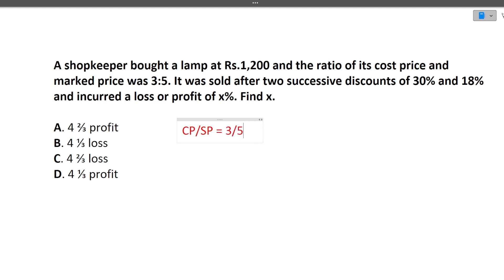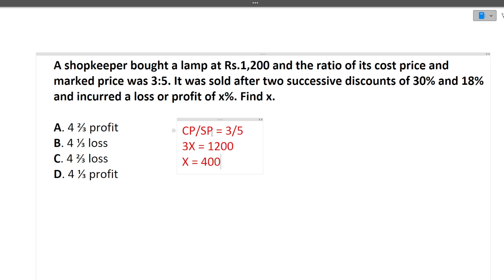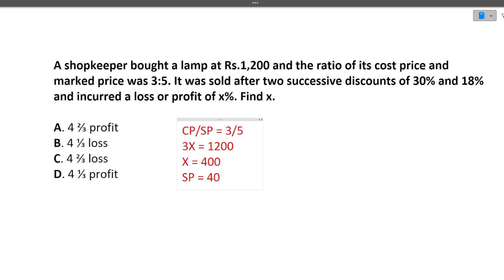Cost price is given as Rs. 1200. The relation between cost price and selling price is 3 to 5. So 3 times X equals 1200, giving one unit as 400. Here 3 represents the cost price and 5 represents the selling price. So the actual selling price SP equals 400 times 5, which is Rs. 2000.